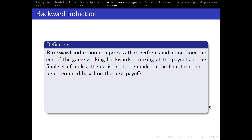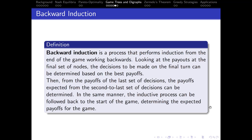Backward induction is a process that performs induction from the end of the game working backward. Looking at the payoffs of the final set of nodes, the decisions to be made on the final turn can be determined based on the best payoffs for the player making the move. From those payoffs, the expected payoffs of the second-to-last set of decisions can be determined. The inductive process is then followed back to the start of the game, determining the expected payoffs for the entire game.